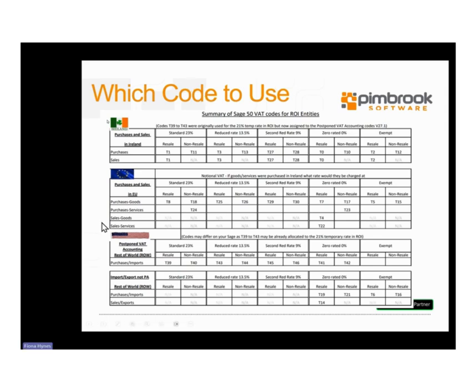Under the EU section you'll see that we've also separated out the purchase and sale of goods and services, as on the VAT3 return the E1, E2, ES1 and ES2 boxes need to be populated accurately. T4 and T22, used for the sale of goods and services within the EU, also enable Sage to create the VIES return.